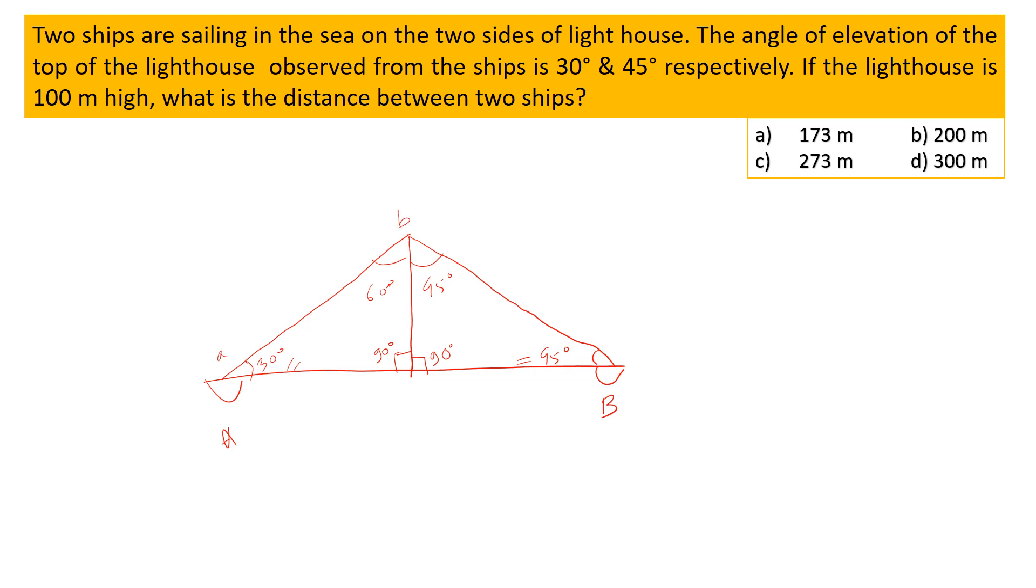So height of the lighthouse is given, and that is 100 meters. So we have to calculate the distance between these two ships. Now we can see in triangle BCD, tan 45° is equal to CD upon BC.